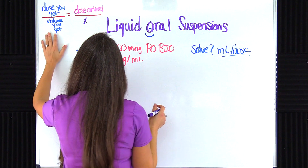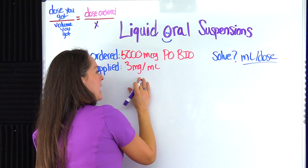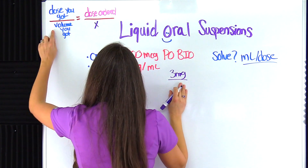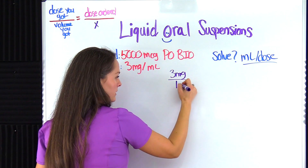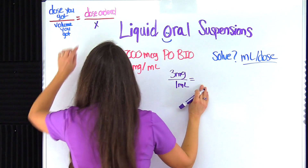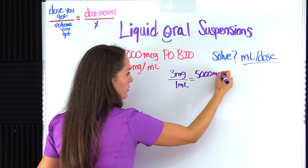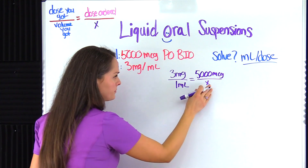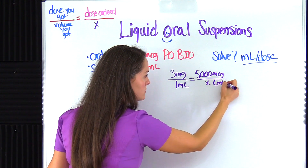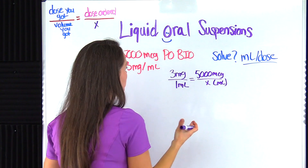So first let's do our known ratio. The dose we got — what we're supplied with — is three milligrams over the volume we got, which is one milliliter. This is equal to our unknown ratio: the dose that's been ordered, which is 5,000 micrograms, over x — and we're trying to figure out the milliliters, which is the amount we're supposed to give per dose.